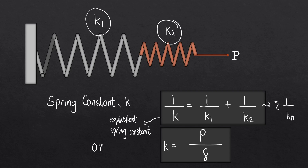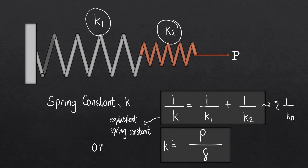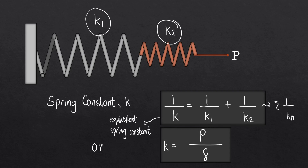For series connections, if you don't want this formula and you have a singular force P, then k will just be the force over the total elongation considering the two springs. This is another way. Next, let's move on to springs laid parallel to each other.